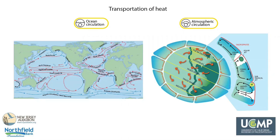Atmospheric and ocean circulation influence each other. These processes are driven by the uneven heating of the Earth's surface by the Sun and the Earth's rotation. Atmospheric and oceanic circulation are the two primary ways that heat is redistributed across the entire surface of the Earth, which in turn brings us our daily weather and shapes regional climates. Increasing the Earth's average temperature, for example due to an increase in greenhouse gases, changes these circulation patterns, altering climate and in turn Earth's ecosystems.